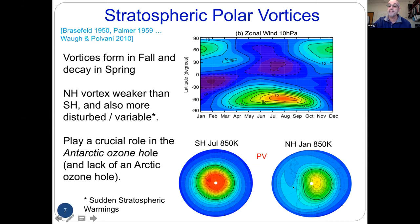The fact that the Antarctic stratospheric vortex is stronger and colder is why there is an Antarctic ozone hole and not an Arctic ozone hole.